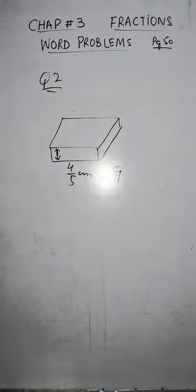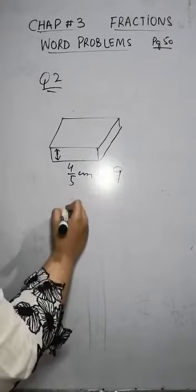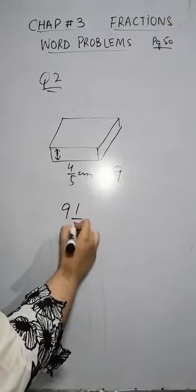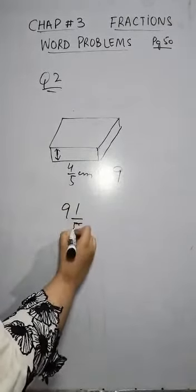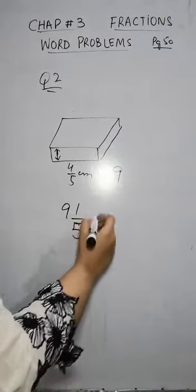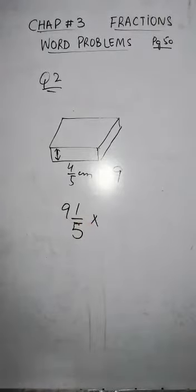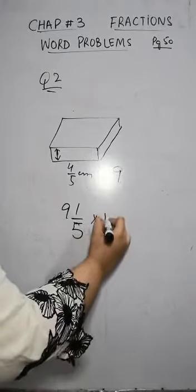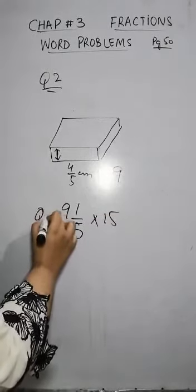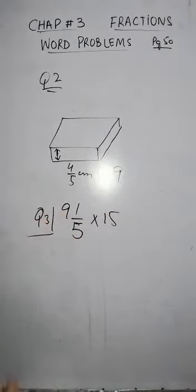Question number three is the same. You have 9.5 kg mangoes in a curtain and you have to do 15 curtains. So simply, you multiply 9.5 kg. That is for you, question number three.